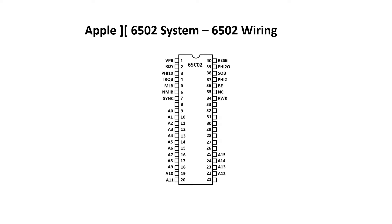Next, the data bus was connected and then the address bus. NC just means not connected, so we can ignore that. And if you remember back to the introduction video, there are a couple of clock signals that we don't need to use. That helps, but there are still 11 signals left.